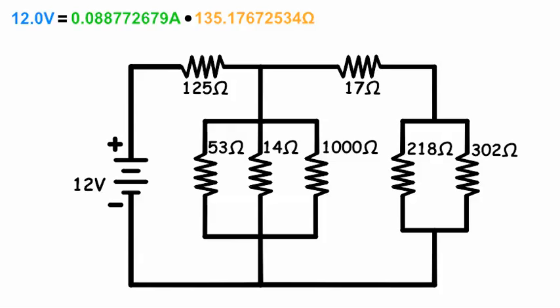In simplifying, we started from the outer branches and worked back toward the current source. To fill in the details, we'll work in the opposite direction. We follow current flow from current source to ground.